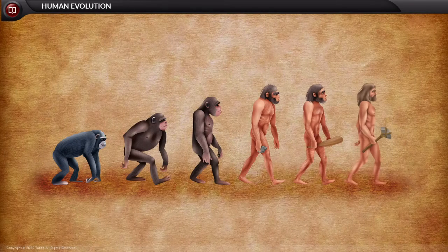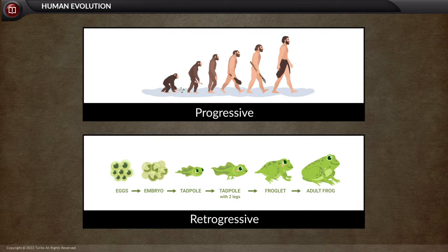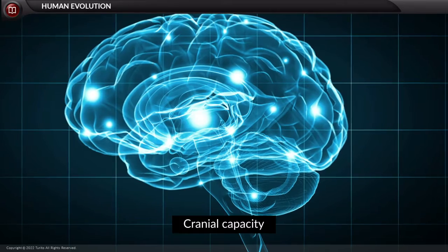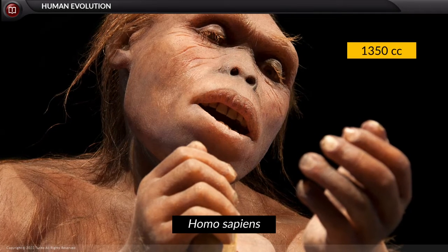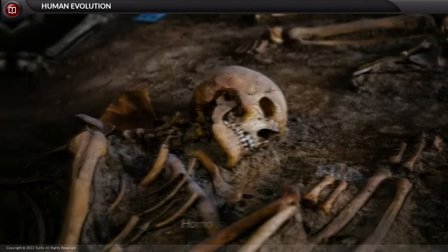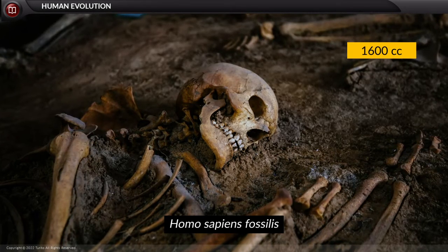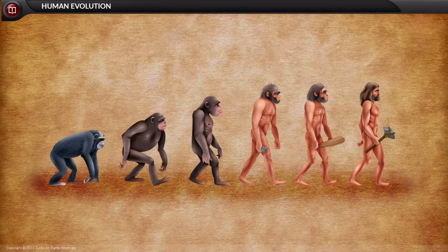Human evolution is not a progressive process. Evolution is not simply from simple to complex forms; instead, it can be either progressive or retrogressive. Taking cranial capacity as an example: the present species Homo sapiens has a cranial capacity of 1350 cc, while the immediate ancestor species, called Homo sapiens fossilis, had a cranial capacity of 1600 cc — quite more than the present species. This clearly proves that evolution, in this case, was retrogressive in nature.